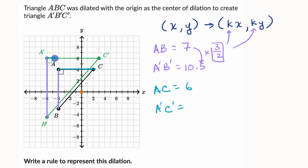One, two, three, four, five, six, seven, eight, nine. So yes, our scaling factor is looking good. So it looks like we're multiplying by three halves.